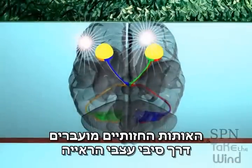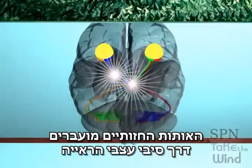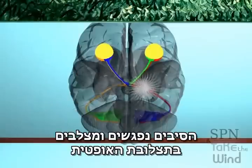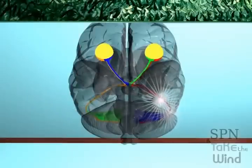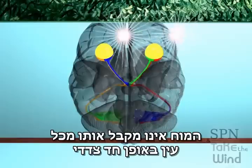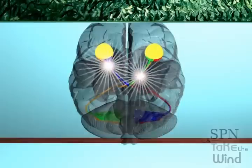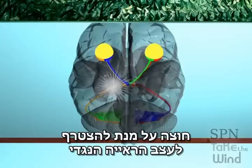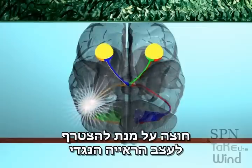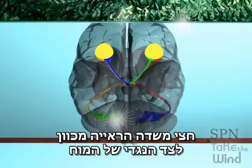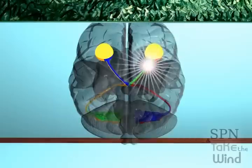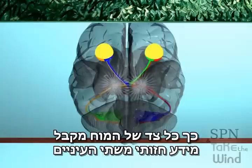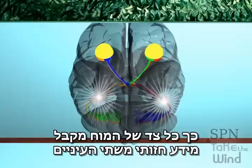The visual signals are transmitted along the fibers of the optic nerves. The fibers meet and cross at the optic chiasm. The brain does not receive signals from each eye unilaterally. Within an optic nerve, a defined group of axons crosses over to join the opposite optic nerve. Half of each optical field is directed to the ipsilateral portion of the brain, and the other half is directed to the contralateral portion. Thus, each side of the brain receives visual information from both eyes.